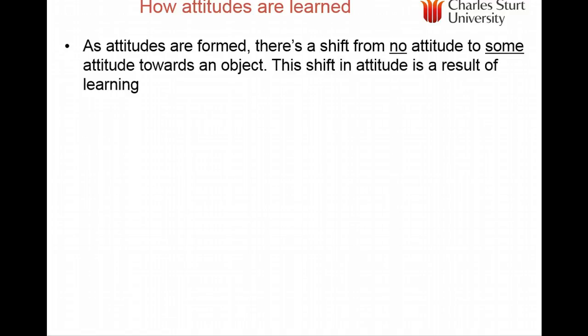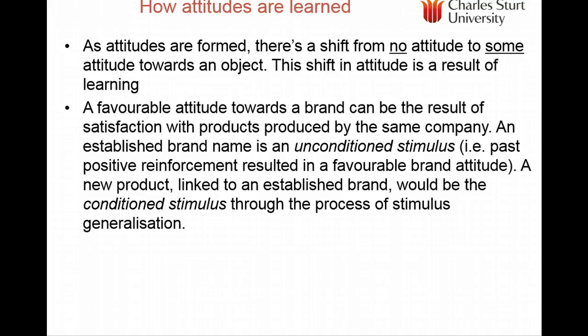How are attitudes learned? We start with no attitude and move to at least some attitude towards an object as a result of learning. You can see the importance of learning and memory here. You might learn a favourable attitude to a brand by instrumental or operant conditioning, or you might have a brand name as an unconditional stimulus with positive reinforcement resulting in a brand attitude. A new product linked to an established brand would be a conditioned stimulus through stimulus generalisation.